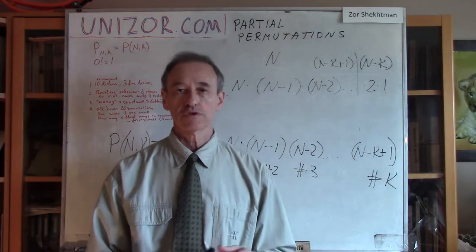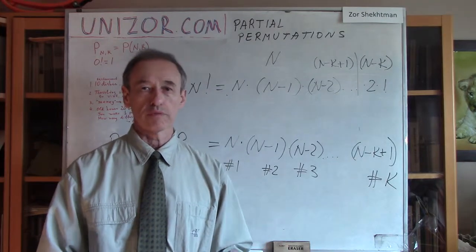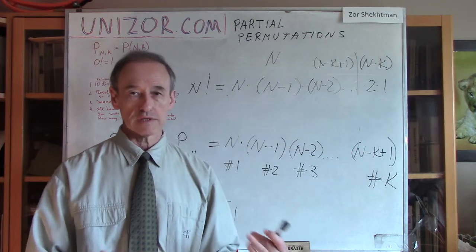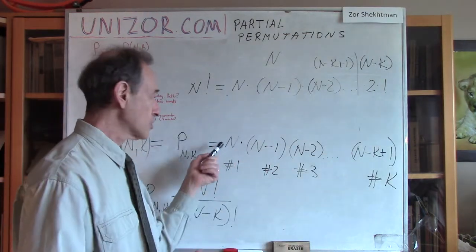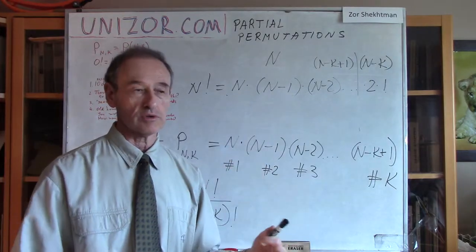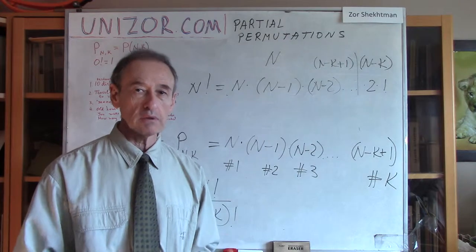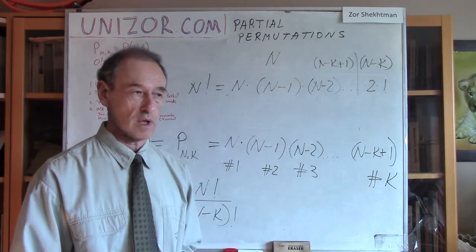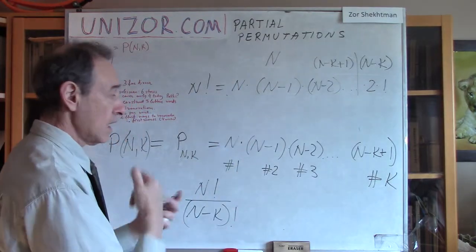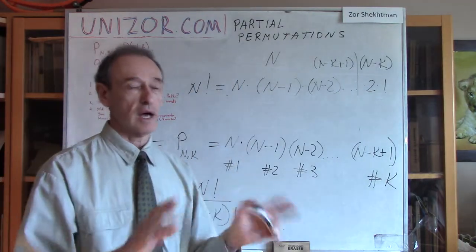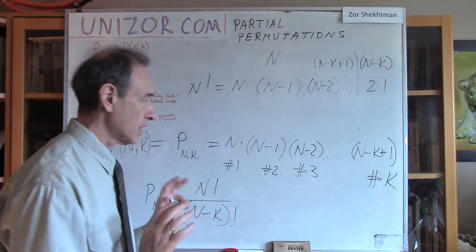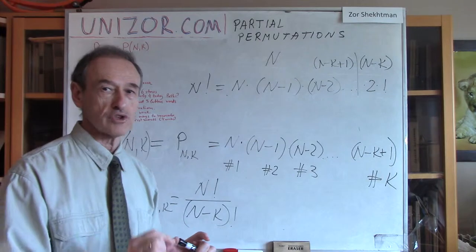I don't want to tell you to just remember this formula. Remember the way we derived this formula — the logic of this formula. How many choices are there for place number one, how many choices for place number two, and so on. This way you will always be able to repeat the logic whenever it's necessary. You just have to recognize the problem as a problem of partial permutations and then repeat the logic. I do encourage you to not remember the formula; I do encourage you to remember the logic behind this formula.